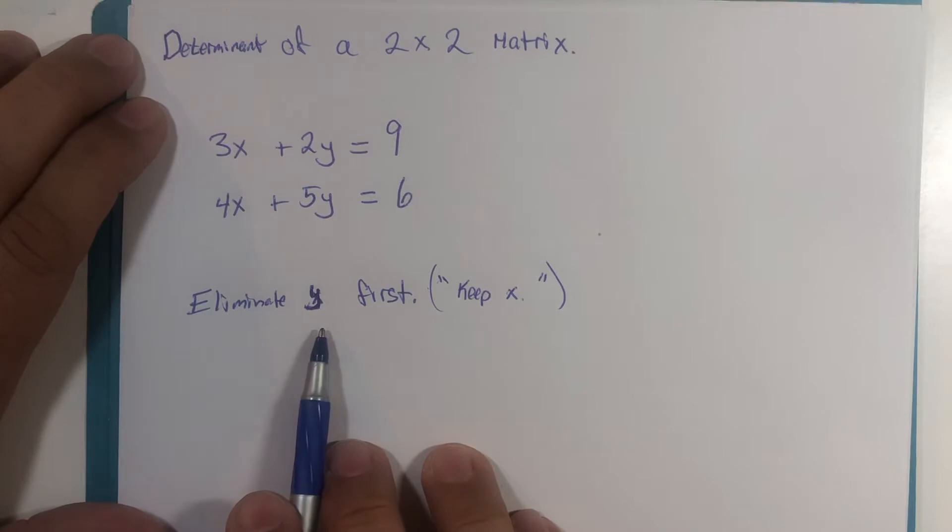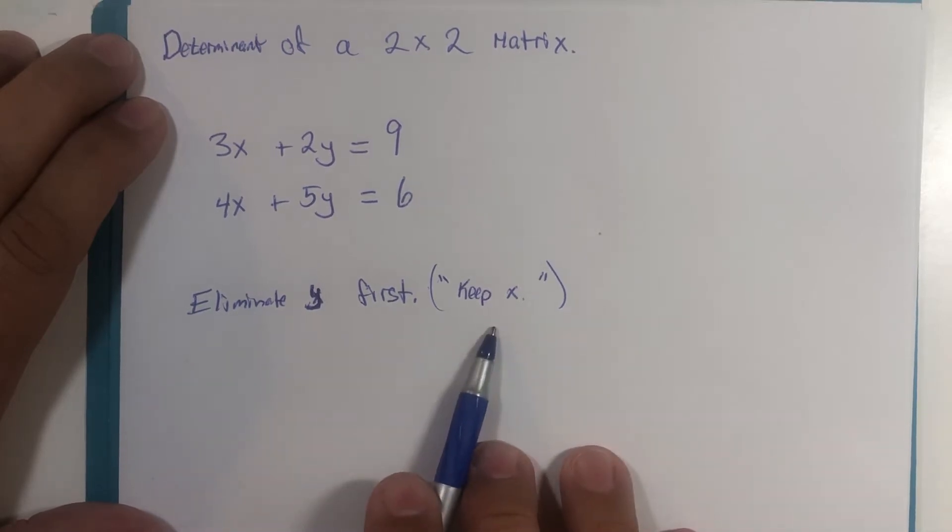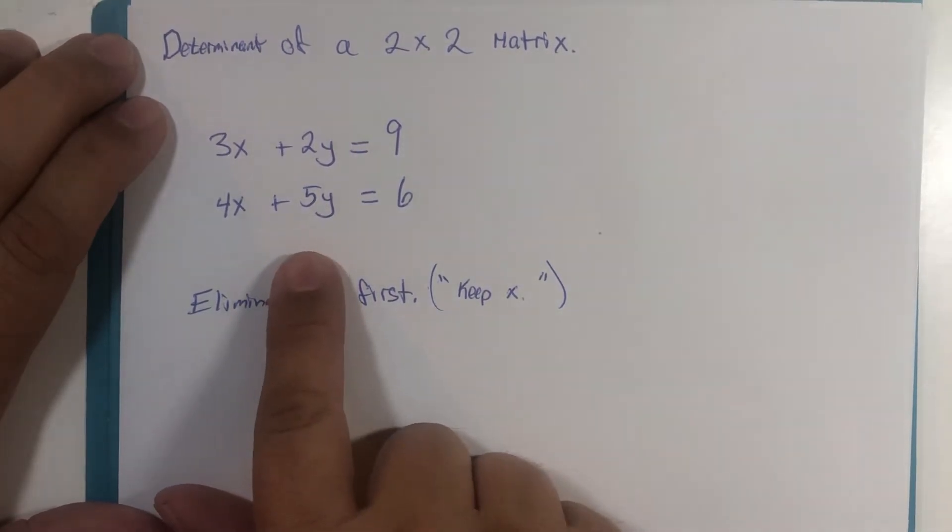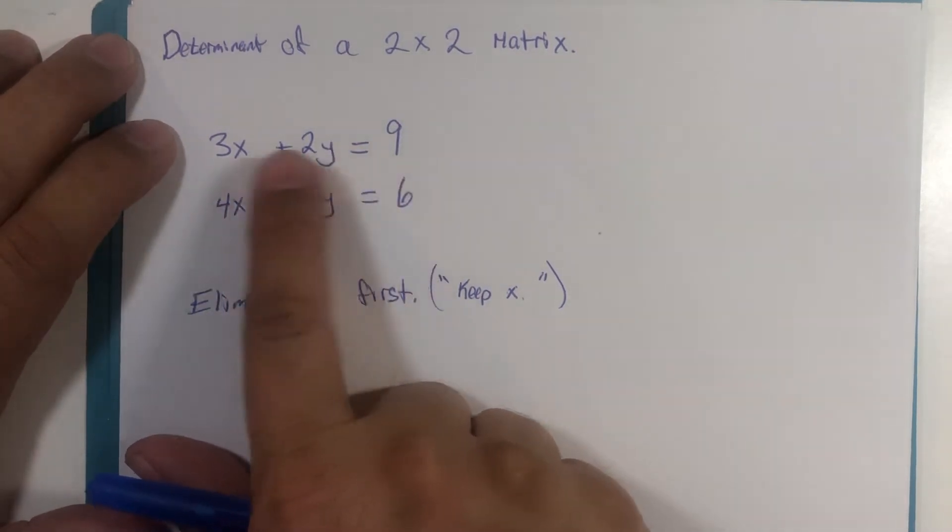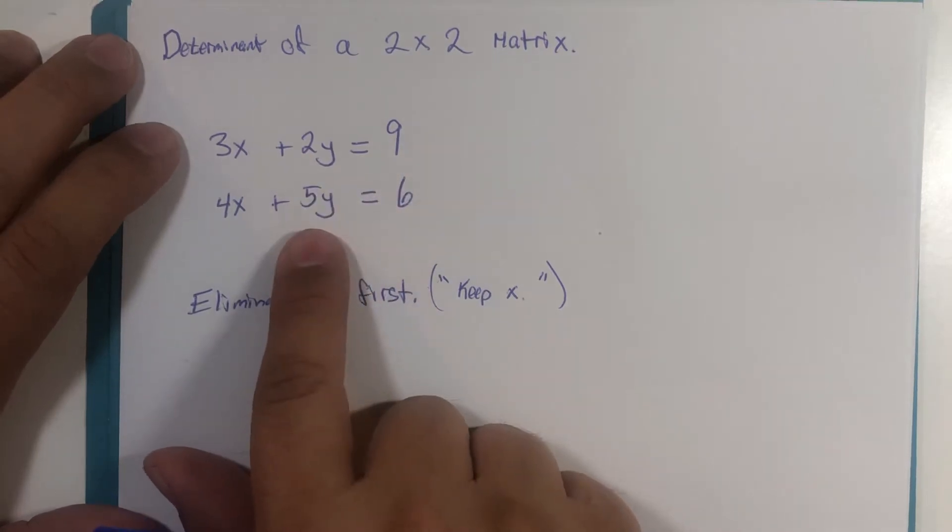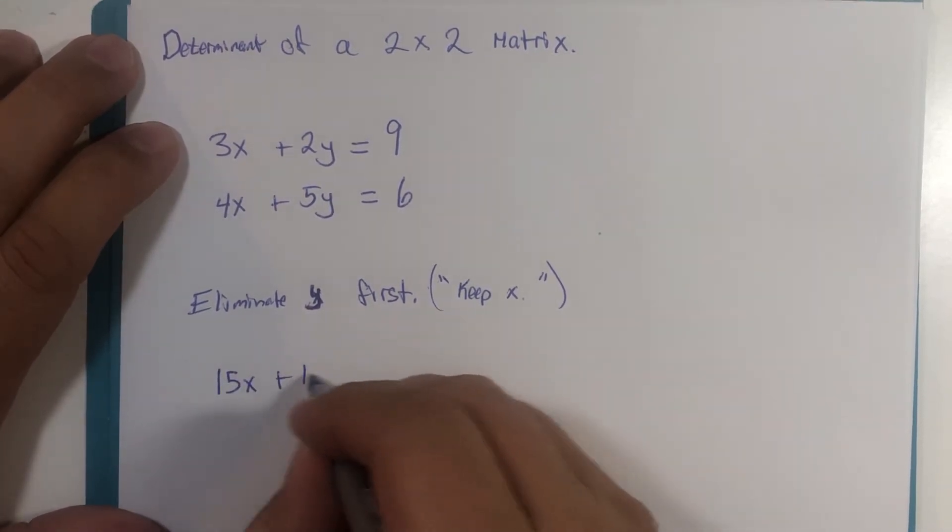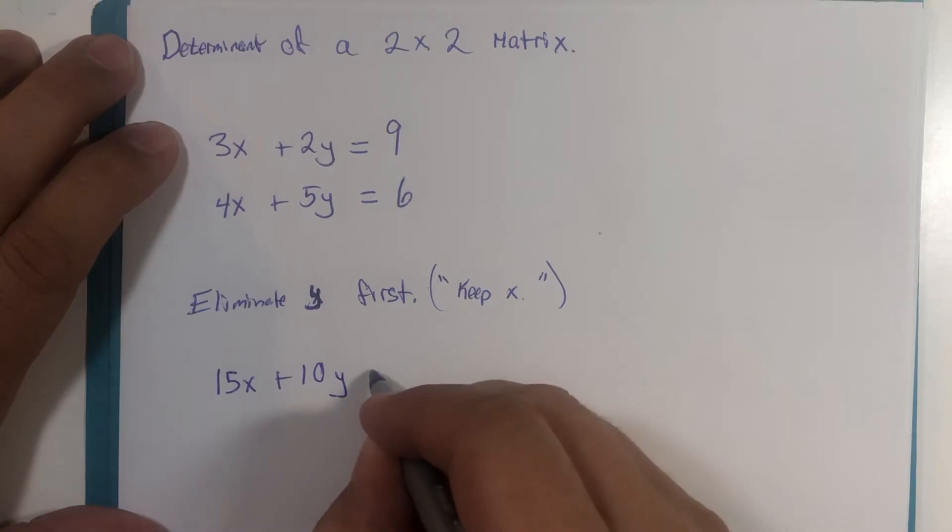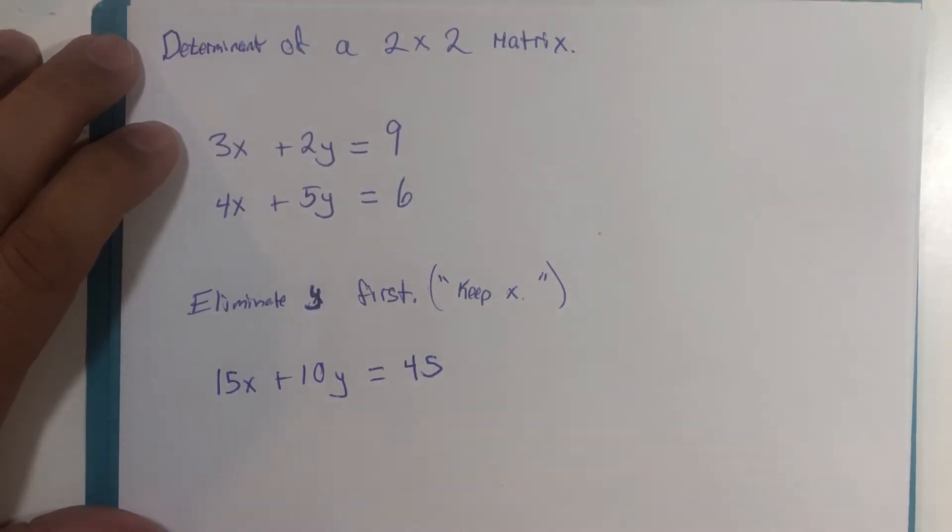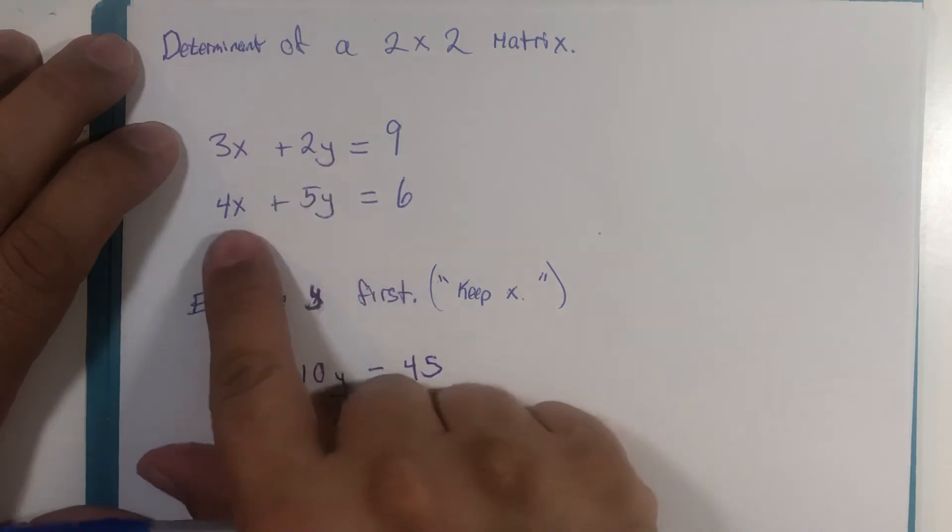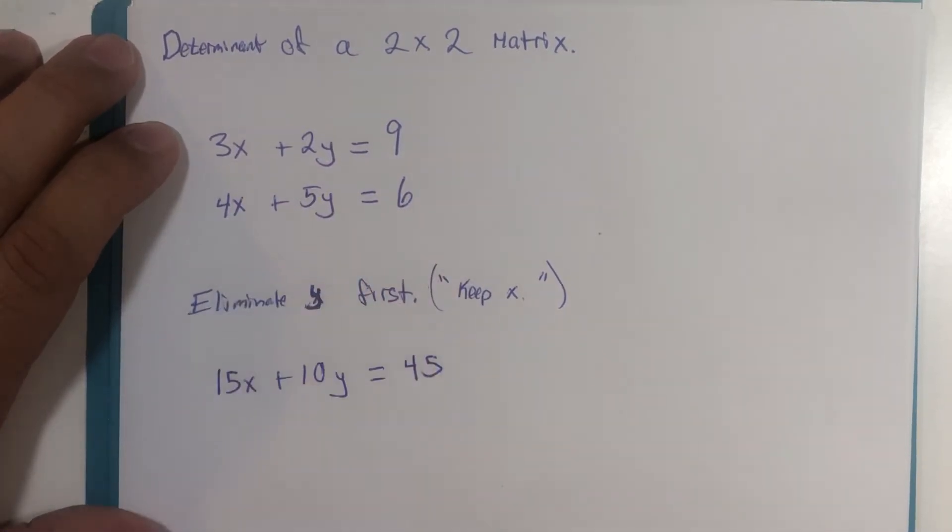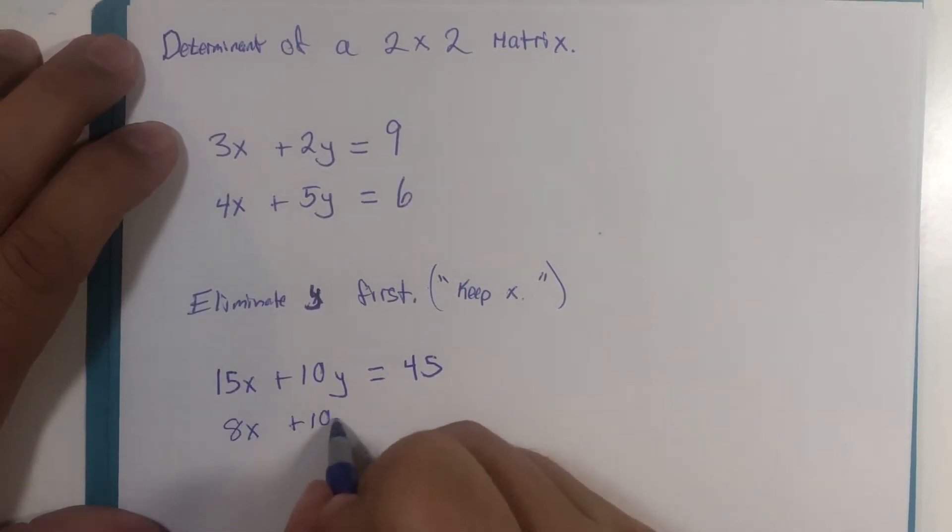We're going to use the elimination method to look at this particular problem. If we're going to eliminate the variable y but keep the x's, we would probably multiply this upper equation both sides of it by 5, so 5 times 3 is 15, 5 times 2 is 10, 5 times 9 is 45. Then we would multiply the lower equation both sides of it by 2: 2 times 4 is 8, 2 times 5 is 10.